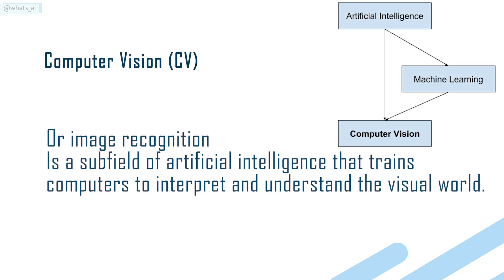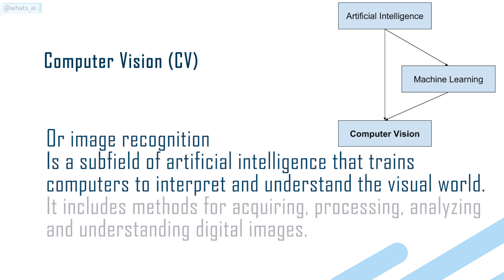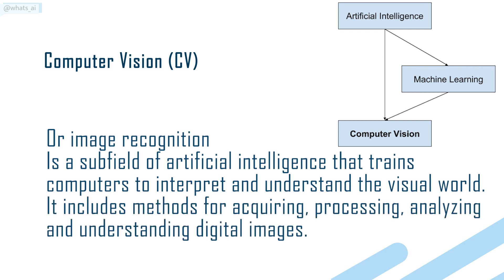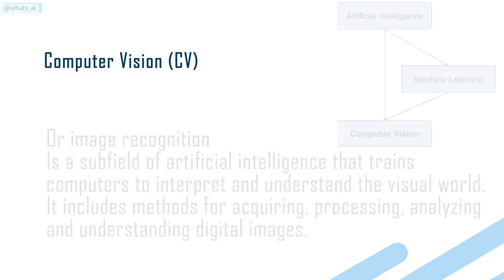Computer vision, or CV, or image recognition is a subfield of artificial intelligence that trains computers to interpret and understand the visual world. It includes methods for acquiring, processing, analyzing and understanding digital images.